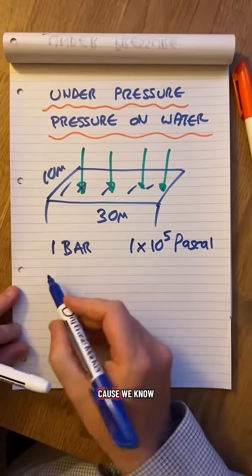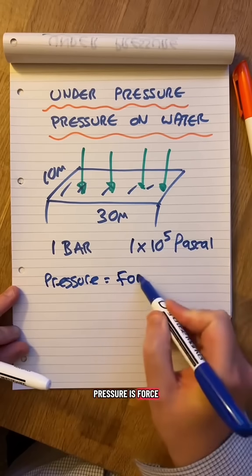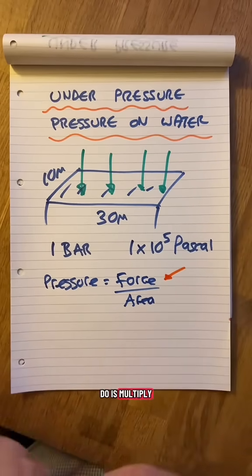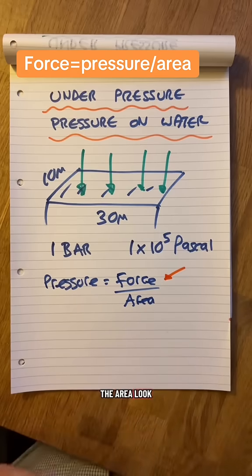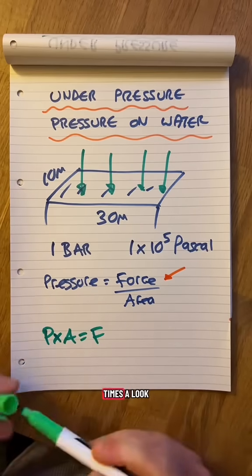Because we know that pressure is force divided by area. To find the force, all I'm going to do is multiply the pressure and the area. Pressure times area is force, P×A=F.